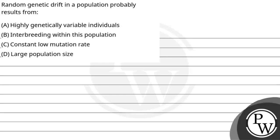Let's read this question. The question says: random genetic drift in a population probably results from — Option A: highly genetically variable individuals; Option B: interbreeding within this population; Option C: constant low mutation rate; and Option D: large population size.